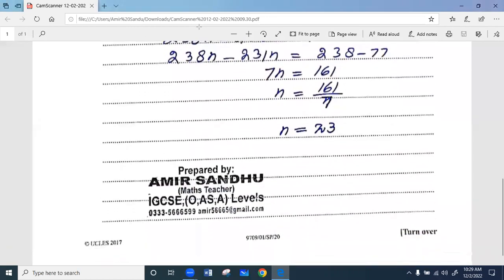Finally, 161 over 7 equals 23, so our final answer is n equals 23.